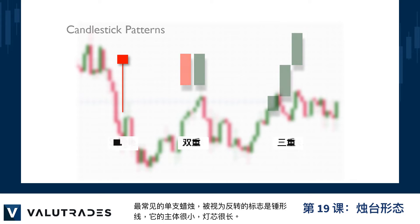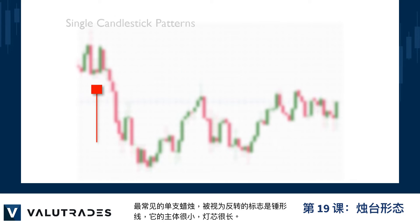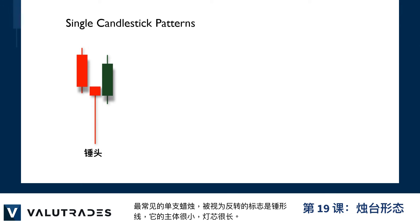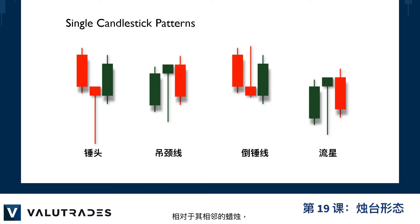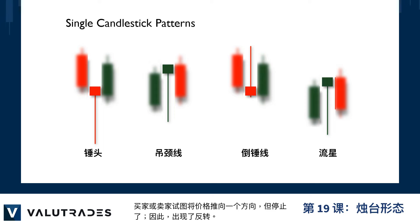The most common single candle seen as a sign of reversal is the hammer, with its small body and long wick. The same results come from the hanging man, inverted hammer, and shooting star. Relative to its neighboring candles, buyers or sellers tried to push price in one direction but stopped, hence the reversal.